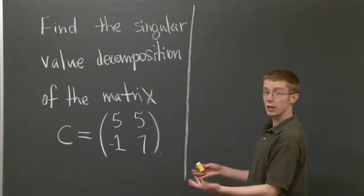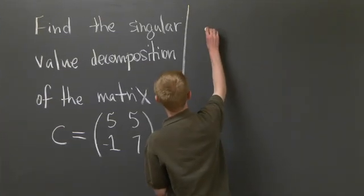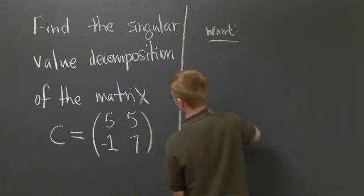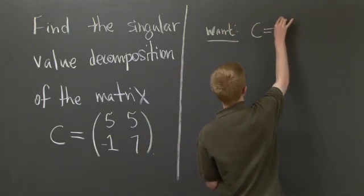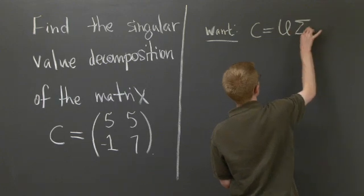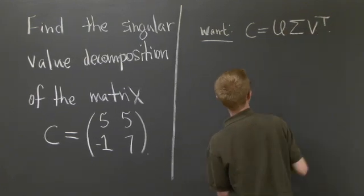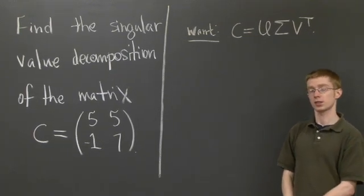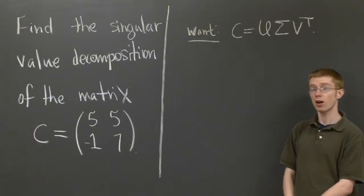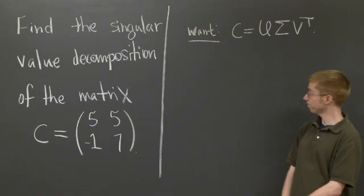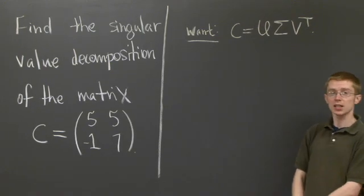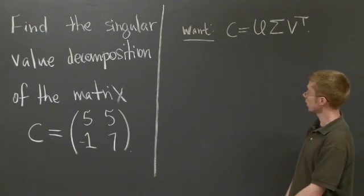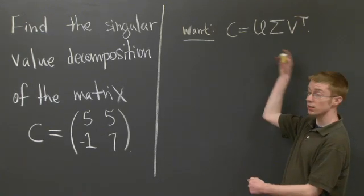So what does the SVD look like? What do we want to end up with? We want a decomposition C equals U Sigma V transpose. U and V are going to be orthogonal matrices. That is, their columns are orthonormal sets. Sigma is going to be a diagonal matrix with non-negative entries. So now how do we find this decomposition?